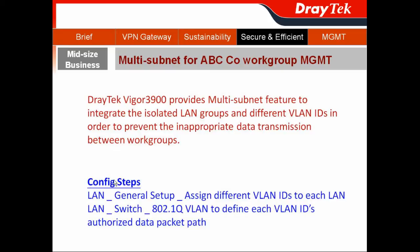The configuration steps are: go to LAN and choose General Setup, then assign different VNIDs to each LAN. Then go to Switch and use the 802.1Q VLAN to define each VNID's authorized data package.